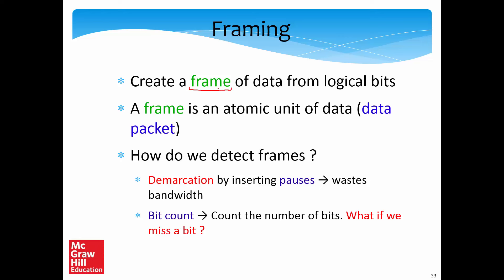A frame can have 4 bits, 8 bits, 32, or 128 bits, so frames can come in different sizes. In this layer, we treat a frame as an atomic unit of data or a data packet, which essentially contains a sequence of bits. There are two ways to detect frames. The first way is by demarcation, which means that we transmit a sequence of bits and then pause for some time, then transmit again and pause, and so on.